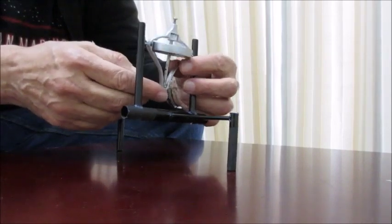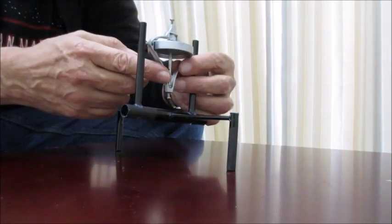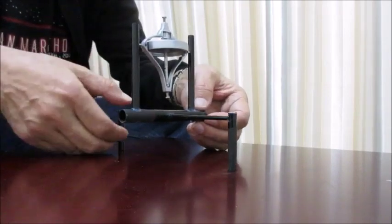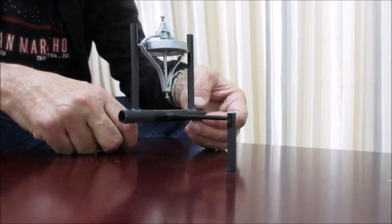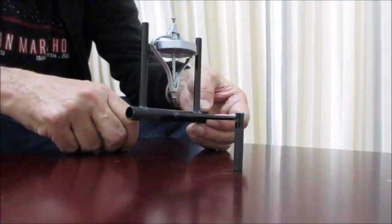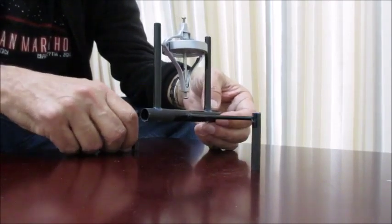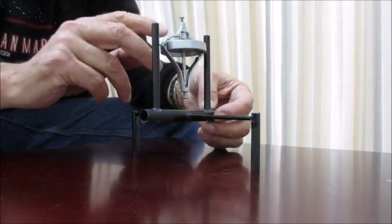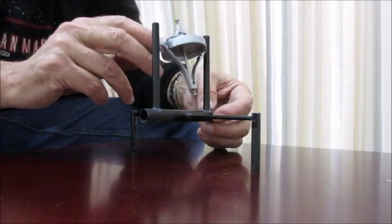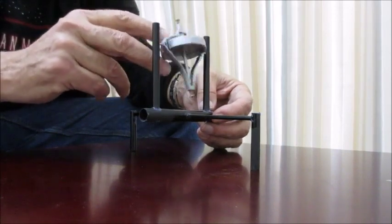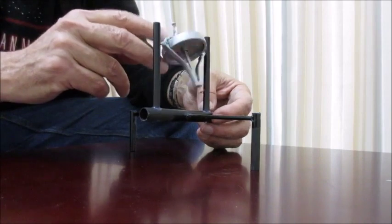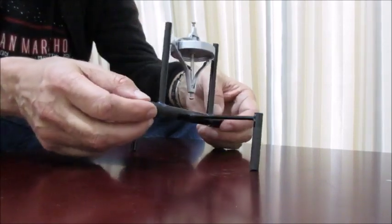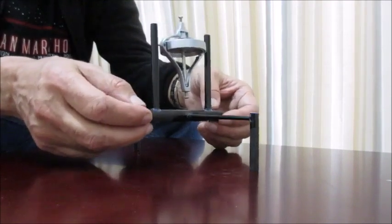If you try to just take a gyroscope and attach it to a two-wheeled vehicle like a bicycle, it will not balance the bicycle. It will just fall over. So what you have to do is put it into this configuration, create a gimbal for this to roll around that axis and then it will control the balance of the entire vehicle this way.